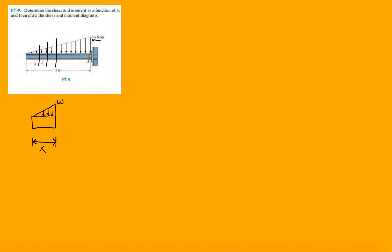What I am going to do is set up a proportionality. I'll say W over X equals 6 over 3. This gives me a new distributed load scaled to size X: W equals 2X kilonewtons per meter.